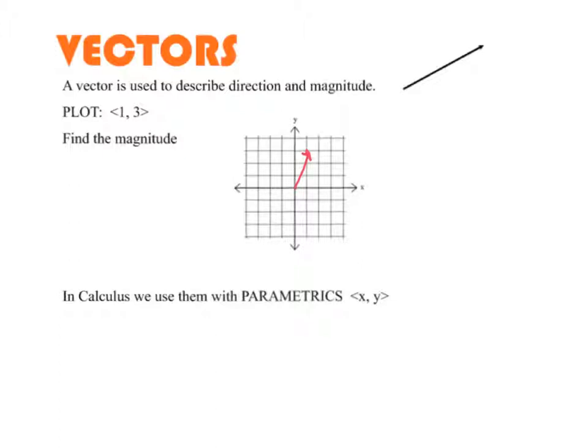Now, magnitude is length. This just means the length of the vector. So of course we would use Pythagorean theorem. So the square root of 10.